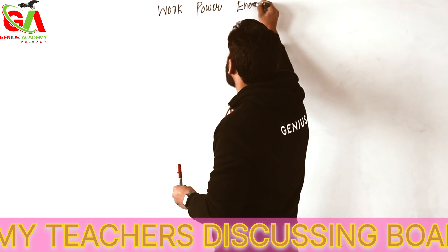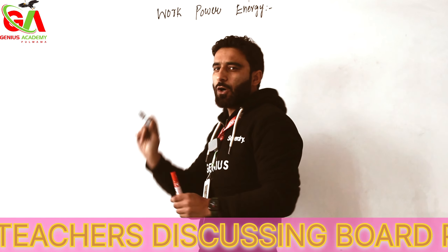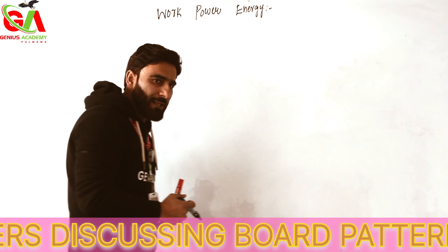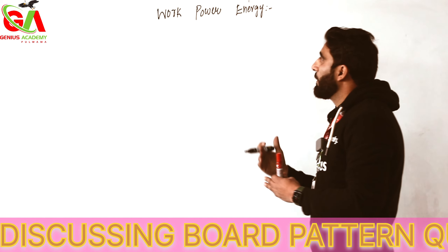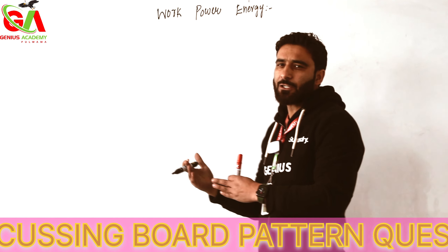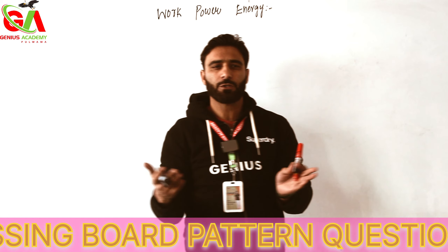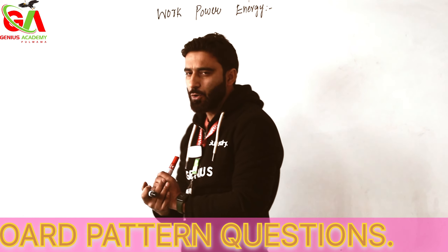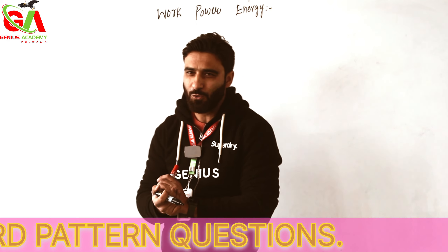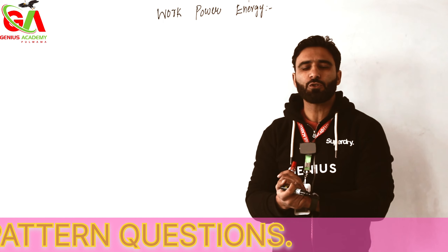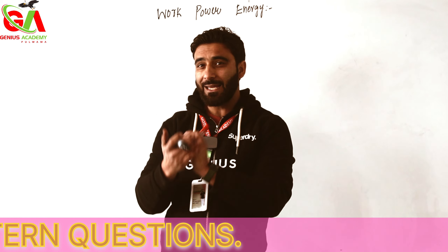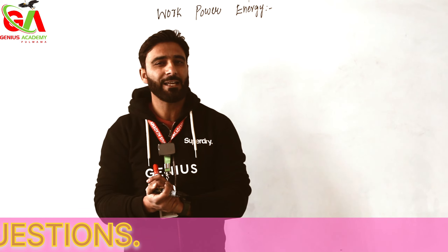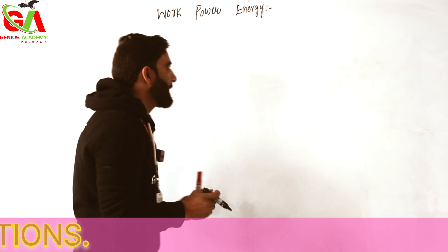Work, Power and Energy is a very important chapter. You can get five-mark questions or two to three mark questions from this chapter. Work is an easy topic: W = F × displacement. Negative work, positive work, zero work — you can understand it from notes. Kinetic energy, which is due to motion, is ½mv². But the most important topic in this chapter is the Work-Energy Theorem.